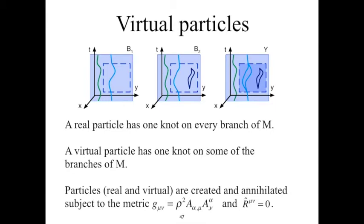We previously showed how the manifold can spontaneously produce pairs of knots, and this allows for the creation of virtual particles. In this theory a real particle has one knot on every branch of M. Looking at the branched manifold Y, the particles in green and light blue are both real particles. The green particle never crosses any branching of Y and appears just once on Y, and likewise appears once on both b1 and b2. The light blue particle crosses a branching of Y, and where it crosses that branching, it has a knot on b1 and another knot on b2, but appears just once on both of them. There is a particle-antiparticle creation and annihilation shown in purple that appears on the branch manifold Y and also on branch b2. However, this particle pair never appears on branch b1. We therefore say that these particles are virtual.